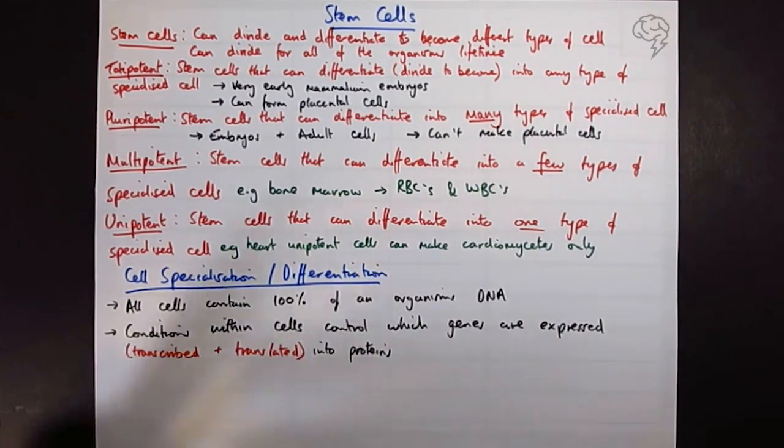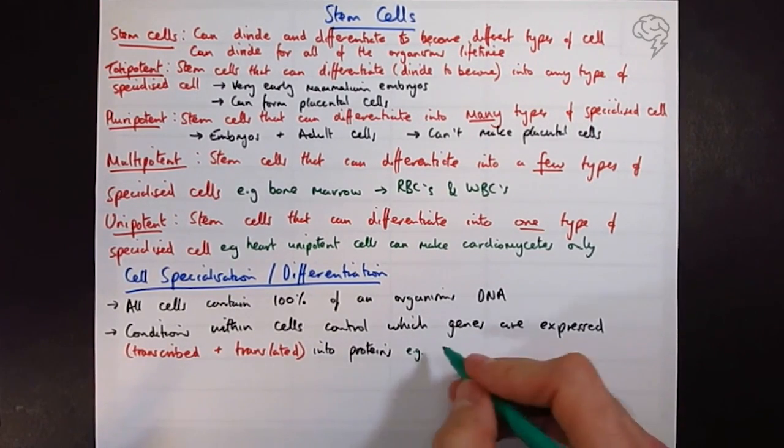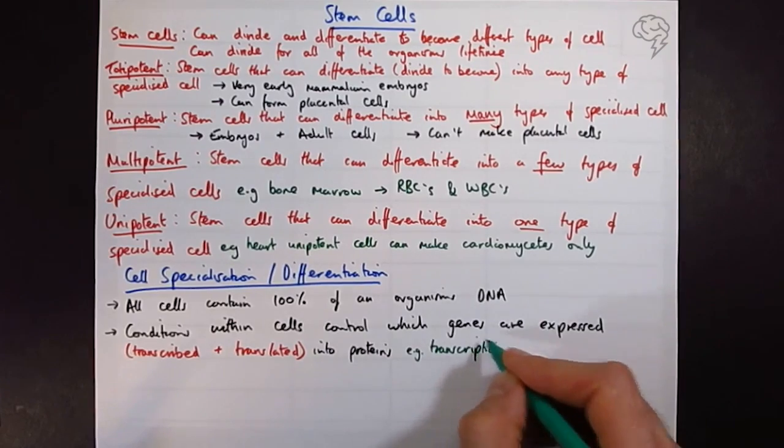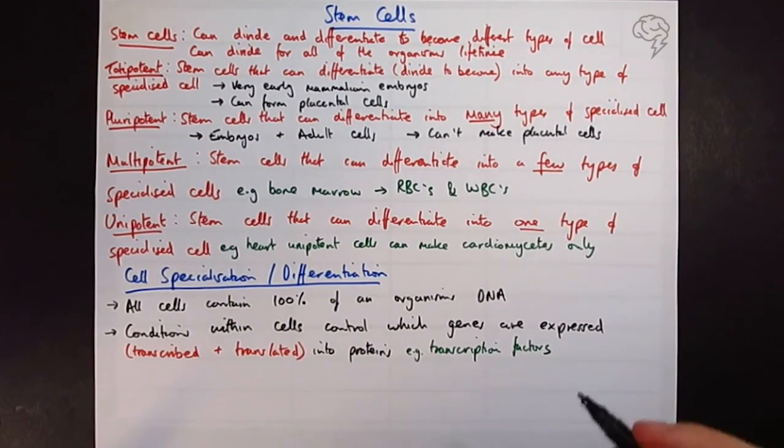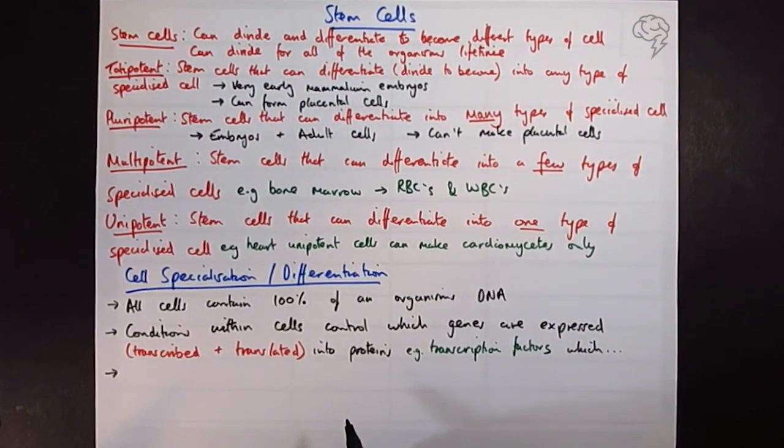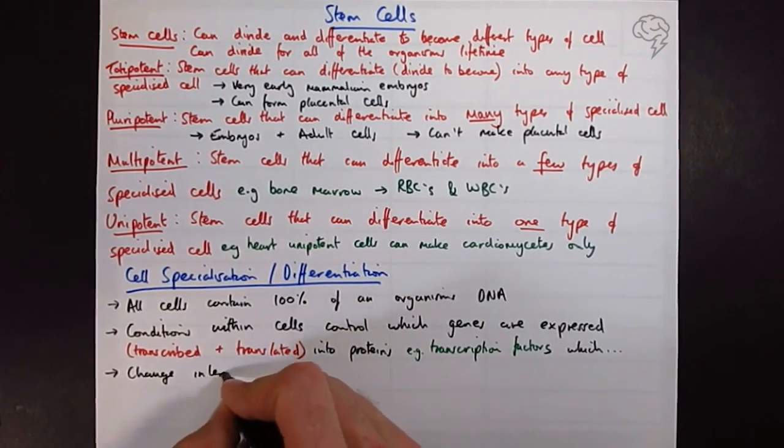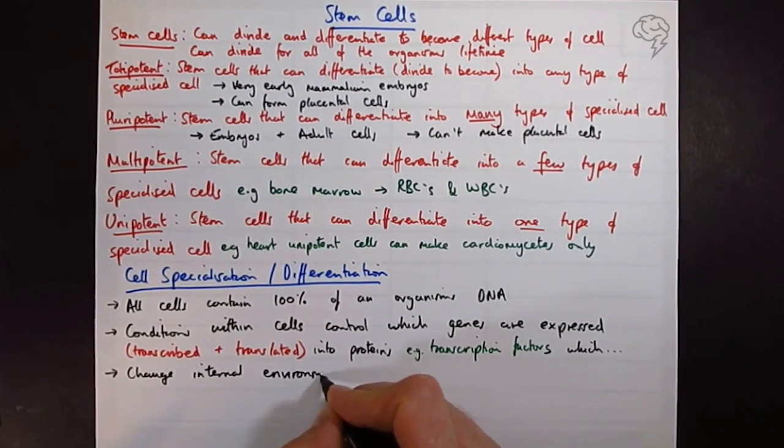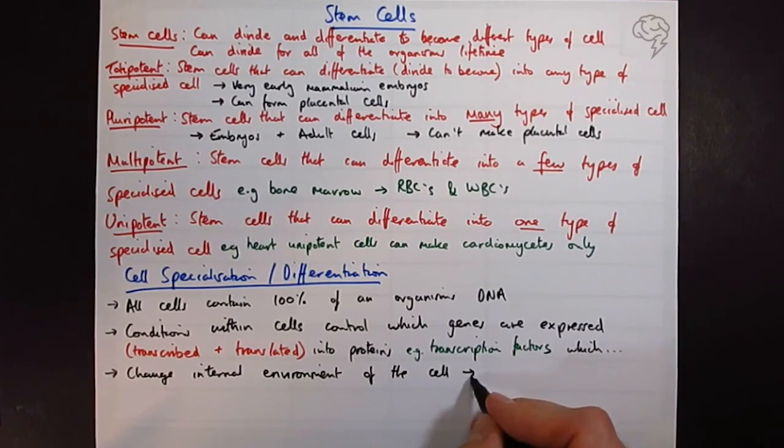So a protein that they might make could be a transcription factor, which is going to control the expression of other genes. And these proteins that are expressed because of the conditions would change the internal environment of the cell, and this is going to affect the expression of other genes.